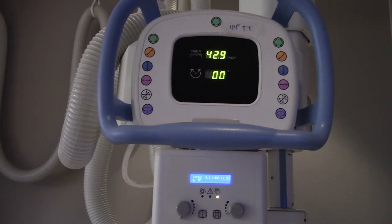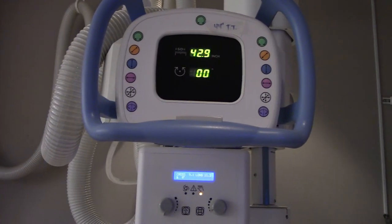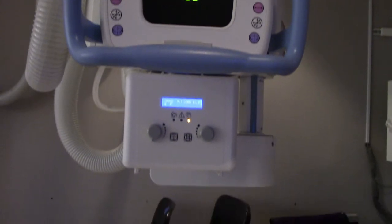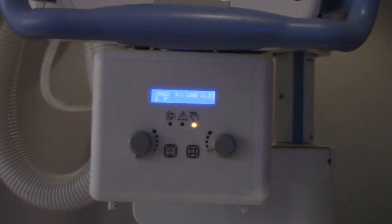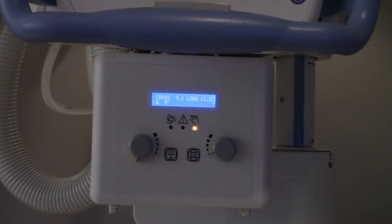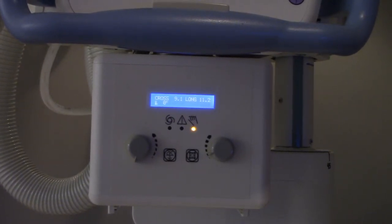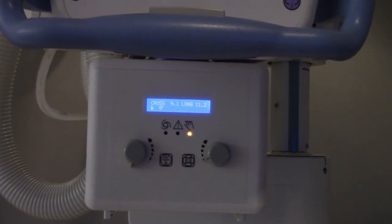We have here just a generic x-ray tube. Underneath the x-ray tube there is a device, that thing right there we refer to as a collimator. Now the collimator has a couple of dials and they control the longitudinal and the transverse width of the x-ray field, and I'll show you how that works.